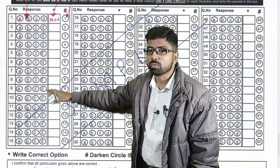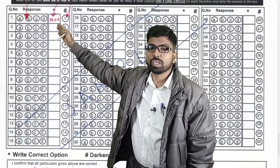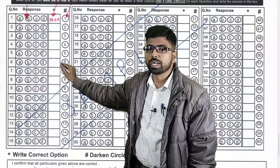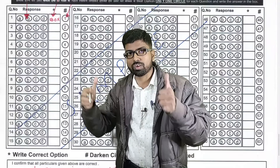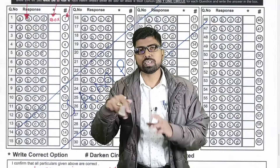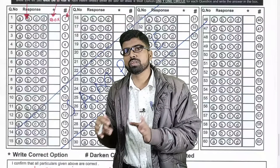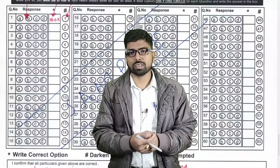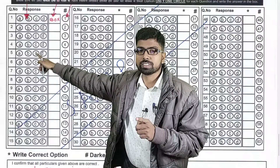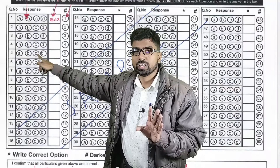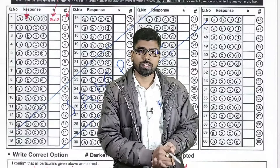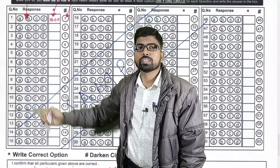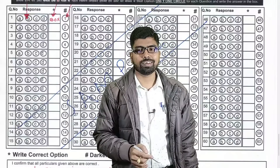First, fill all the OMR bubbles. Once filled, there is a separate answer box for every question. Suppose you initially darkened C but later realized B is the correct answer — then write B in the answer box. The answer written in the box is the final answer. What you bubble or encircle does not matter; it is what you write in the box that is taken as final.